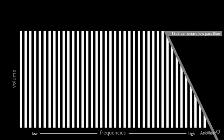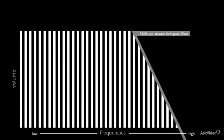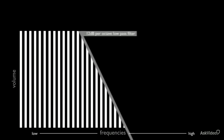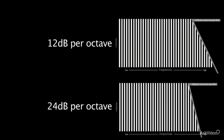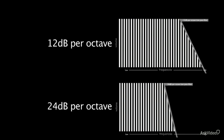12 decibels per octave is a more gentle slope allowing more of the attenuated frequencies to be heard. Compare the angles of the angled bars of the 24 decibel per octave filter and the 12 decibel per octave filter and you'll see what I mean.